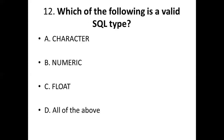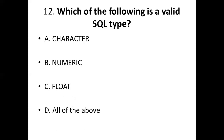Twelfth bit. Which of the following is a valid SQL type? Option A, character. Option B, numeric. Option C, float. Option D, all of the above. Answer: Option D, all of the above.